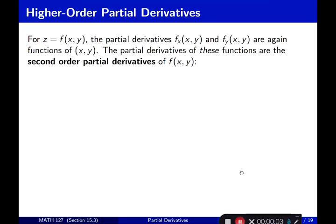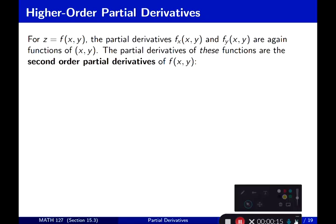Section 15.3, continuing higher-order partial derivatives. For z equal to f of x and y, the partial derivatives f_x and f_y are again functions of x and y. Just as in single-variable calculus the derivatives were functions of x, the partial derivatives of these functions are second-order partial derivatives of f of x and y.